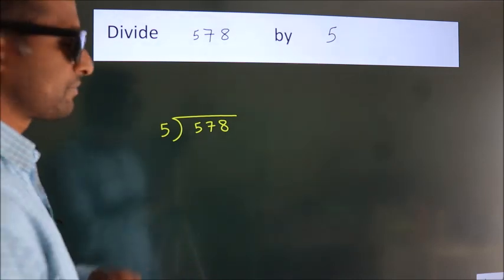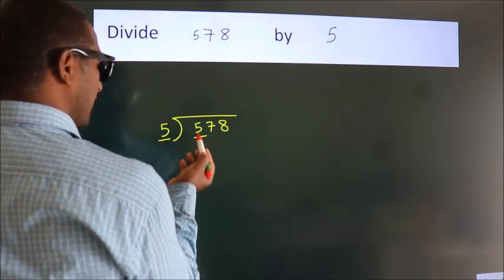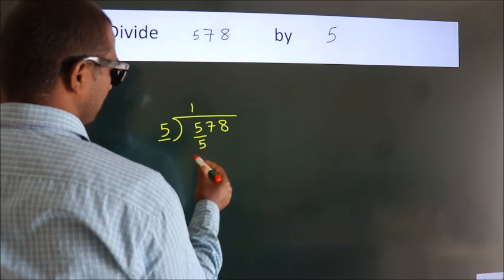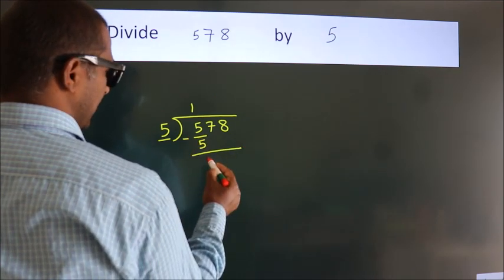Next, here we have 5, here 5. When do we get 5? In 5 table, 5 wants 5. Now we should subtract, we get 0.